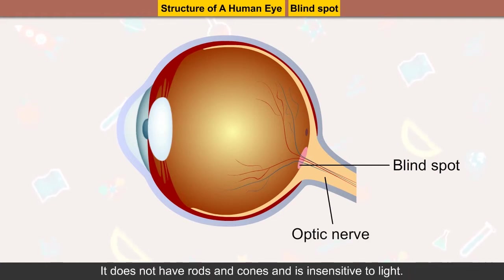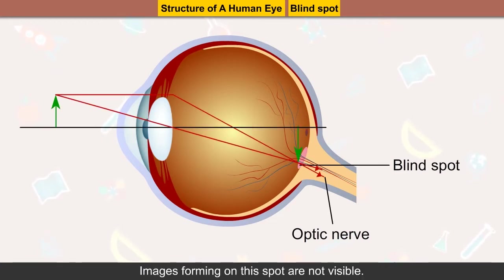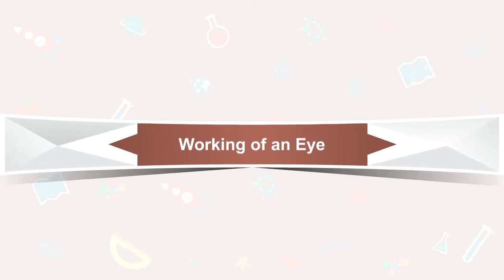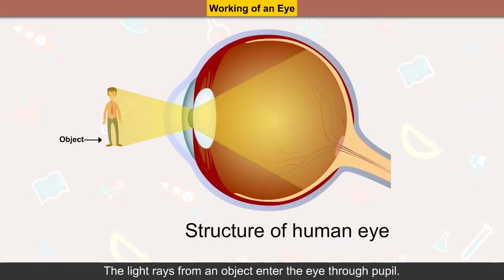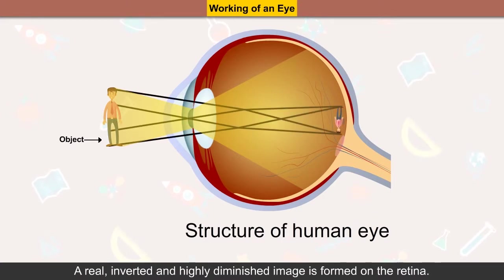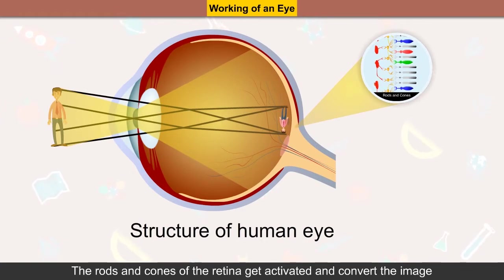Blind spot: it is a portion of the retina where the optic nerve enters the eyeball. It does not have rods and cones and is insensitive to light; images forming on this spot are not visible. Working of an eye: light rays from an object enter the eye through the pupil. A real, inverted, and highly diminished image is formed on the retina.